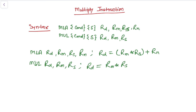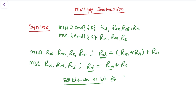One important thing to highlight: if the result produces more than 32 bits, since these registers can only hold 32-bit values, the ARM processor automatically uses a pair of registers to store the final result. If we multiply two 32-bit registers together, it will produce a minimum of a 64-bit result, which can be stored into a register pair.